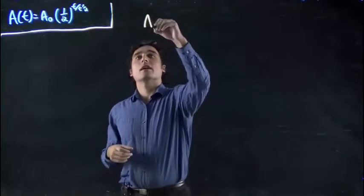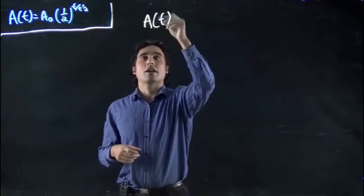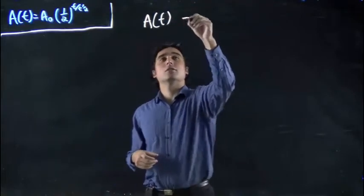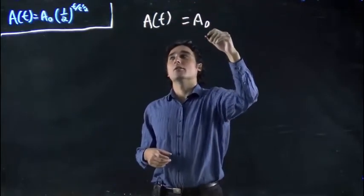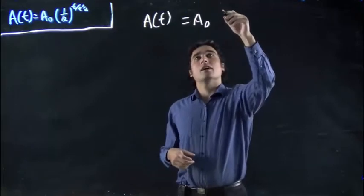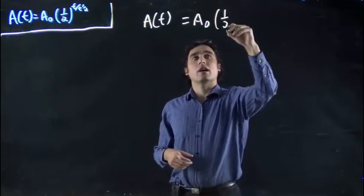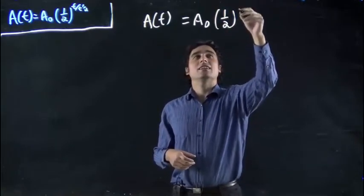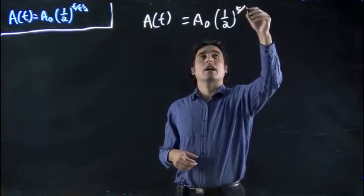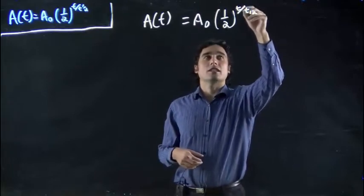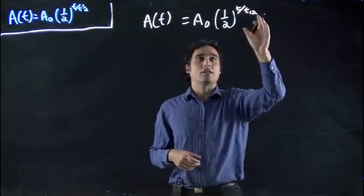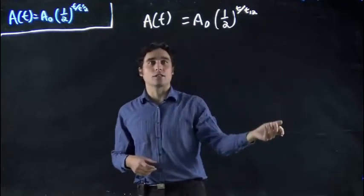So again, what is it? A(t), the amount at some time t, is equal to the original amount A₀ times one-half, which is raised to the power t divided by t₁/₂. So that's all the exponent right there. t divided by t₁/₂ is the exponent that one-half is raised to.